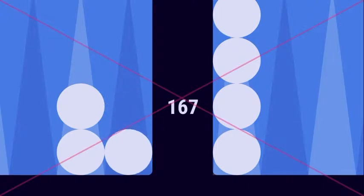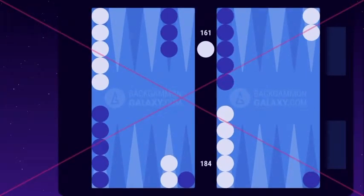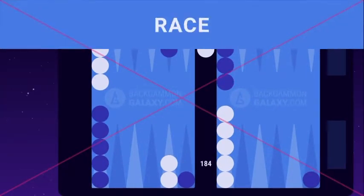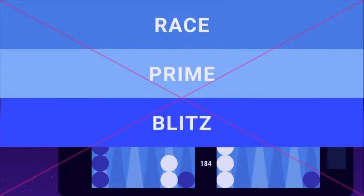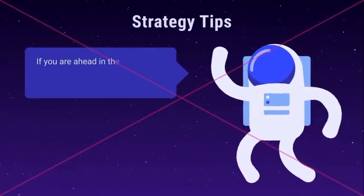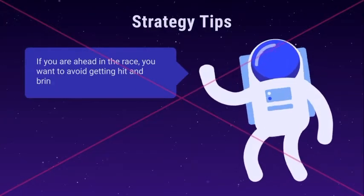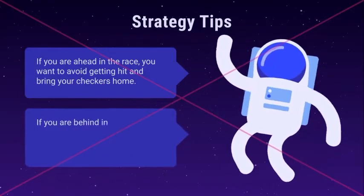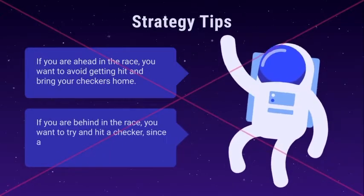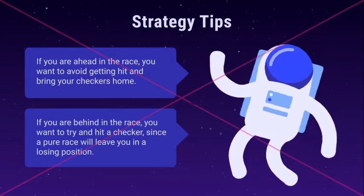When a checker moves forward, the pip count decreases. When a checker is hit, the pip count increases. The player with the lowest pip count is ahead in the race. The pip count determines the optimal strategy to use in the game. If you are ahead in the race, you want to avoid getting hit and bring your checkers home. If you are behind in the race, you want to try and hit a checker, since a pure race will leave you in a losing position.